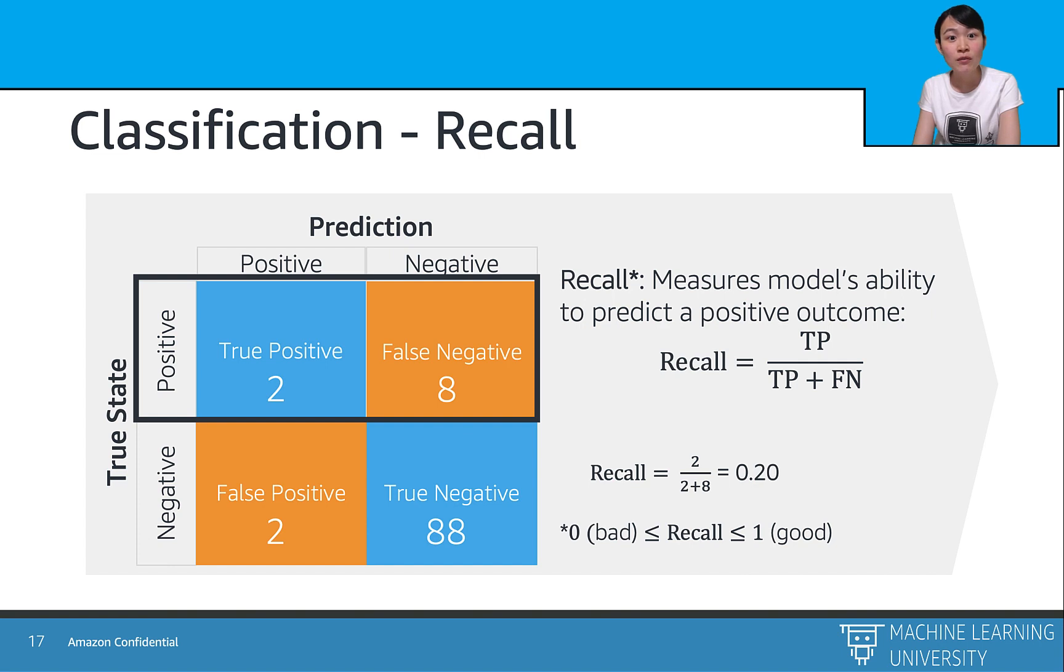Well, besides precision, we have another matrix which focuses on only the positive cases in the ground truth. That is the recall matrix, which measures the model's ability to predict a positive outcome. So it equals the TP, or true positive, divided by the total number of the positive ground truth. And in our example, the recall is 20%, which is tremendously low. And this matrix is extremely useful when we are dealing with the imbalanced data scenario, such as the real disease diagnosis, where we want to focus the model's abilities to capture the positive cases as much as possible. And again, the higher the recall, the better the model might be.